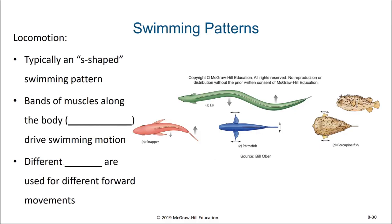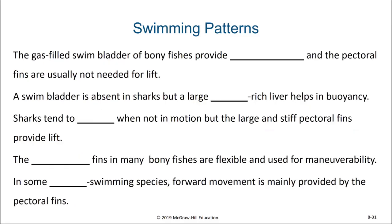Not only do fish have different body shapes, they have different means of moving as well. Often, swimming is in a typical S-shaped pattern where most of the thrust is coming from the tail. Bands of muscle along the body of the fish, known as myomeres, end up driving that swimming motion. However, different fins are used for different types of forward movements — some will use their pectoral fins, some will use their dorsal fins, others will use their tails. The gas-filled swim bladder of bony fish provides buoyancy, and the pectoral fins are usually not used for lift in bony fish as they are in sharks.